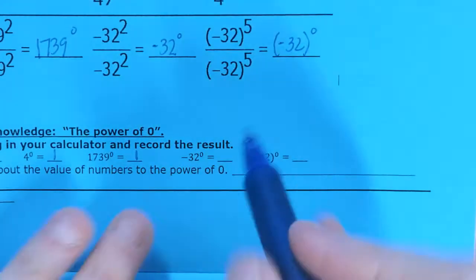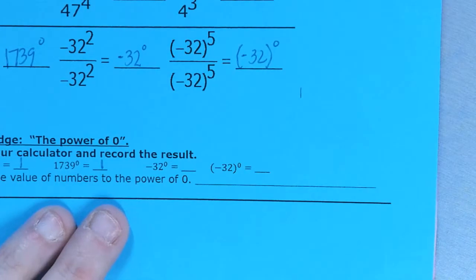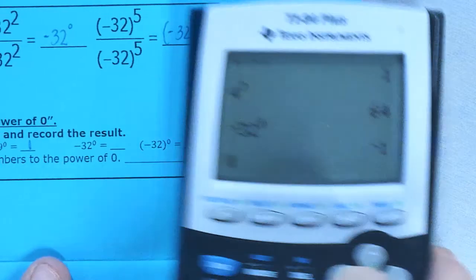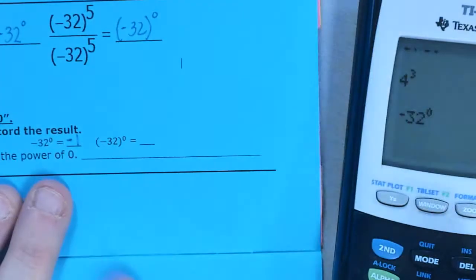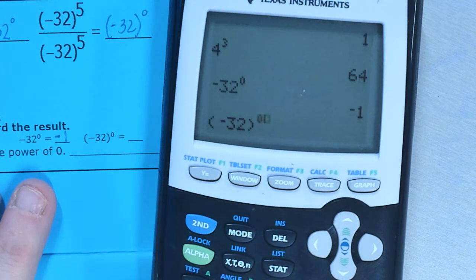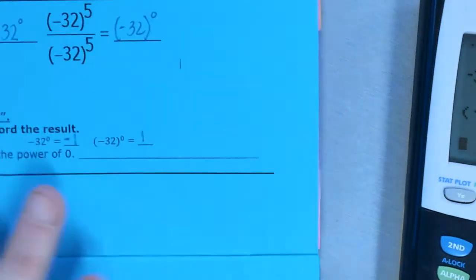Now, I want to talk real quickly about these two, because these two are kind of a special situation. So let's put these in our calculator. We have negative 32 to the 0 power, and I'm expecting 1, but I get negative 1. Now I'm a little freaked out. If I put negative 32 in parentheses to the 0 power, I get positive 1. So why is this happening?